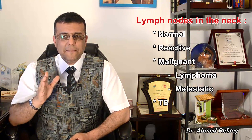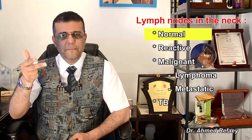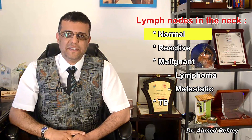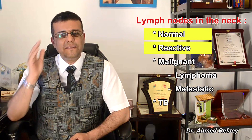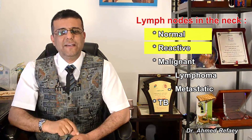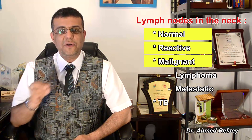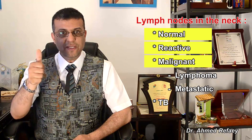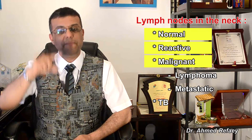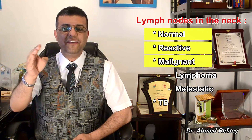To summarize: the normal lymph node in the neck by ultrasound is hypoechoic, oval, with preserved hilum, and decreased pulsatility and resistive index. The reactive lymph node is the same as the normal lymph node except it is larger and always shows hilar vascularity. Malignant lymph nodes — either metastatic or lymphomatous — are rounded, without normal hilum, with markedly increased internal nodal vascularity, either peripheral or mixed, and increased resistive and pulsatility index.